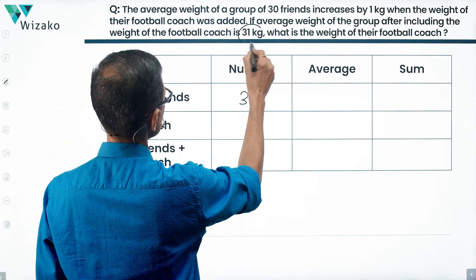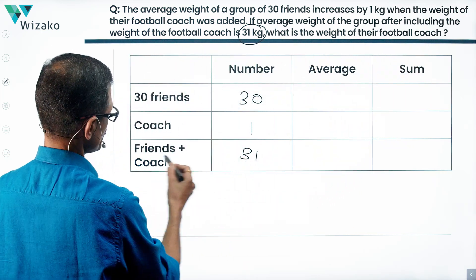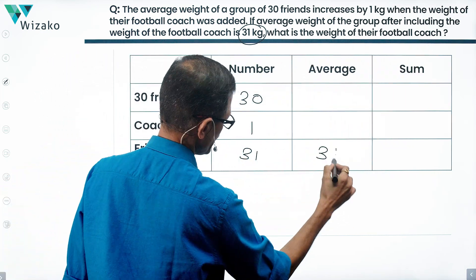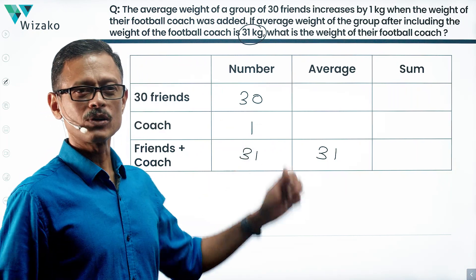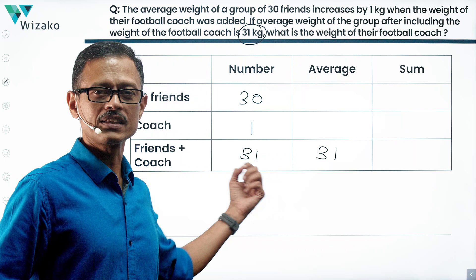There is some information. They basically said that the average weight of the group after including the football coach, the average weight is equal to 31. So we can quickly find out the sum of the weight of all 30 friends and the football coach taken together, all 31 people.